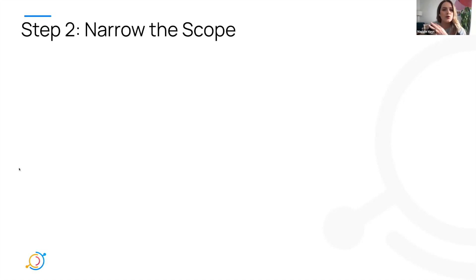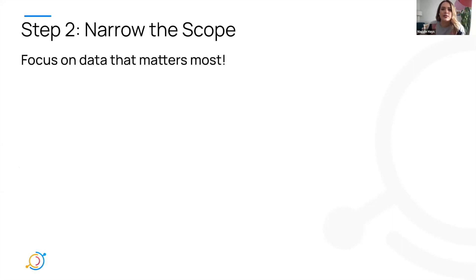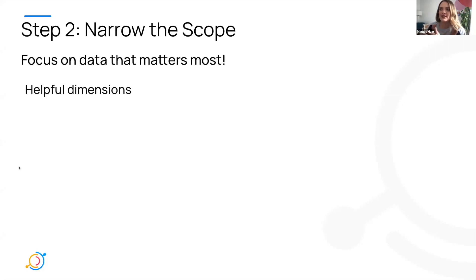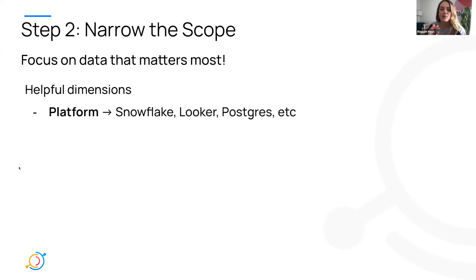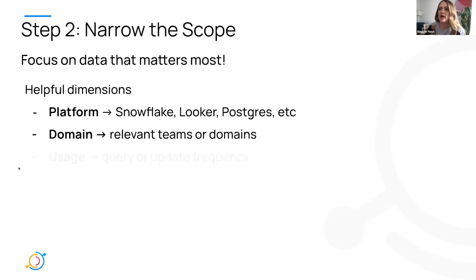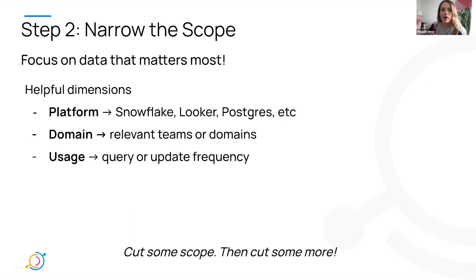The next step is to narrow the scope. If you think about the entirety of your data stack, I guarantee you will not be successful if you seek to add ownership to 200,000 entities in a week or a month — it is just not going to happen. So narrow the scope. Some ways to focus on the data that matters most: maybe you want to target a specific platform, a specific domain — this is really popular in companies that have adopted data mesh — or maybe you want to target entities that have high usage regardless of platform or domain. The idea is, now that you have your goal, set a very finite scope and then cut that scope a little bit more so you can start building out this workflow.